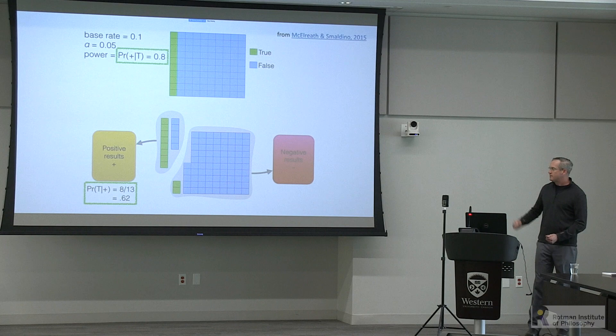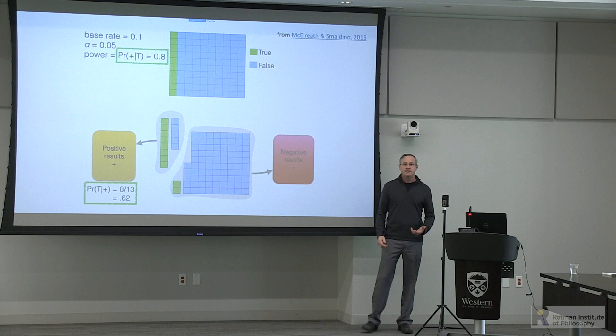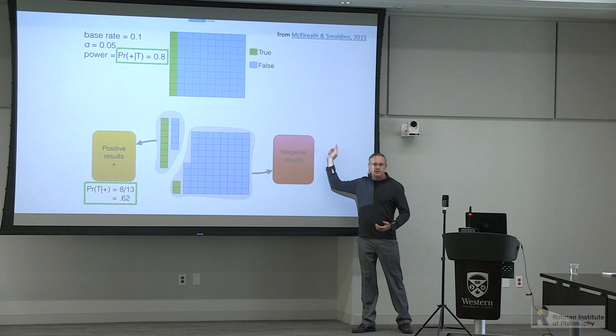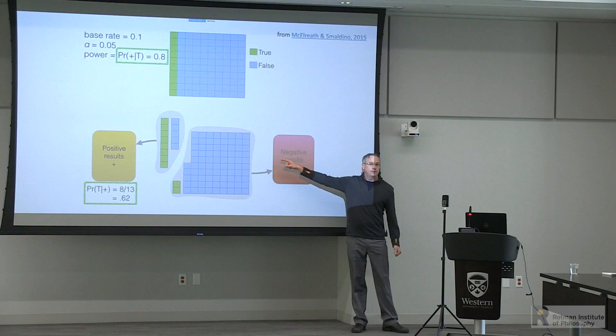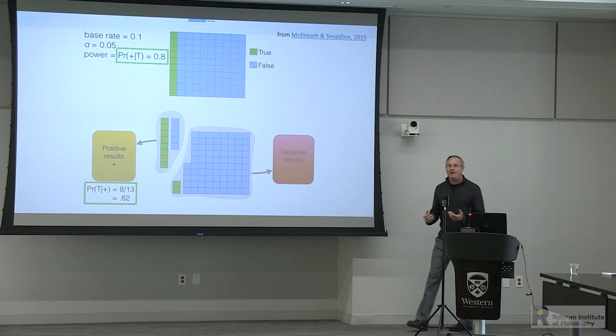There are a non-trivial number of false positives perhaps making it into the published literature, because we typically publish significant findings. Based on these assumptions, false positives can creep in. That can change as the base rate of true hypotheses rises or falls. One way of teasing that apart — and science being self-correcting — is to conduct both direct and conceptual replications over time.